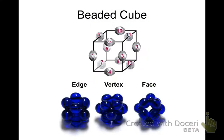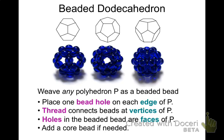Now you can also orient the bead holes in three dimensions, like placing one bead hole on every edge of a cube. A beaded cube is itself a bead with holes in each face — we call this more generally a beaded bead. The beaded dodecahedron is another well-loved example, but don't stop there. You can weave any polyhedron as a beaded bead. You can place one bead hole on each edge of the polyhedron, and then the thread connects the beads at the vertices of the polyhedron, and the holes in the beaded bead are the faces. Lastly, you can add a core bead if needed to keep the beaded bead from collapsing.